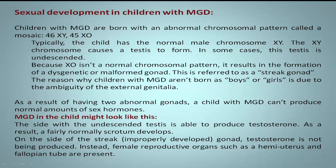The reason why children with MGD aren't born as boys or girls is due to the ambiguity of the external genitalia. As a result of having two abnormal gonads, a child with MGD can't produce normal amounts of sex hormones.